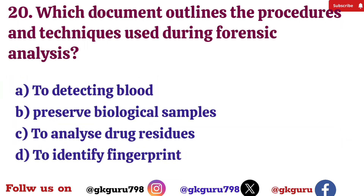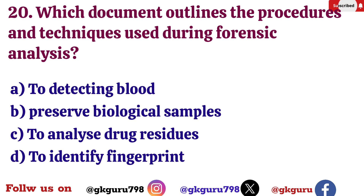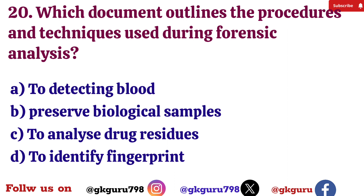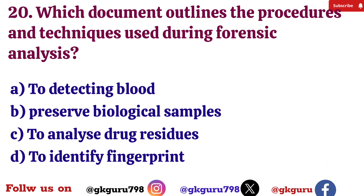Question number 20: Which document outlines the procedures and techniques used during forensic analysis? Option A: Investigation report. Option B: Laboratory manual. Option C: Crime scene log. Option D: Chain of custody form. Correct answer: Option B — Laboratory manual.